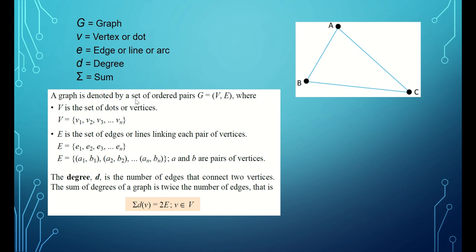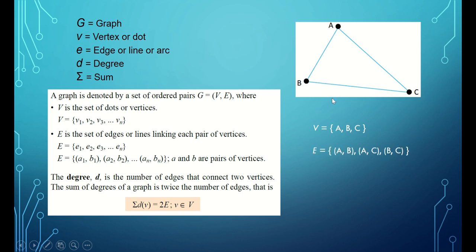A graph is denoted by a set of ordered pairs: G = (V, E), where V is the set of dots or vertices. From the graph, we can write the set V as {A, B, C}. E is the set of edges or lines linking each pair of vertices, so E = {(A,B), (A,C), (B,C)} — these are the three pairs of vertices.